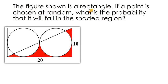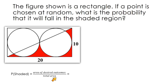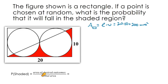Our next problem: the figure shown is a rectangle. If a point is chosen at random, what is the probability that it will fall in the shaded region? This shaded region is a bit more tricky. What we want is the shaded area divided by the total area. The area of the rectangle is easy — length times width gives 20 times 10, or 200 units squared.